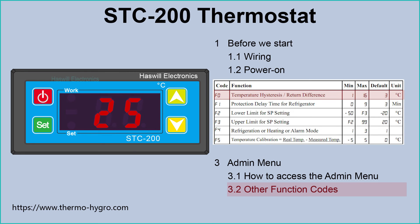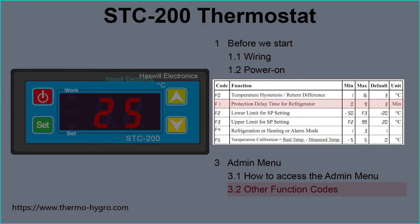We just explained F0 and how to operate it — now let's look at other parameters. If your compressor starts and stops frequently in a short period of time it will die quickly, and F1 can give the compressor a break. F2 and F3 are parameters to limit the range of the set point, to prevent ordinary users from accidentally selecting an outrageous target temperature or children randomly pressing buttons and causing unnecessary losses. F4 is the working mode, or the type of load. We strongly recommend that you modify this parameter first, because some factory-produced STC-200 units will change other parameters to default values after you modify this parameter.